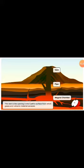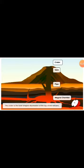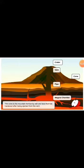The vent is the opening in the earth's surface from which gases and volcanic material escape. The crater is the bowl-shaped depression at the top of the volcano. The cone is the mountain formed by ash and lava that has hardened after being ejected from the vent.